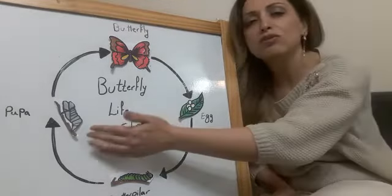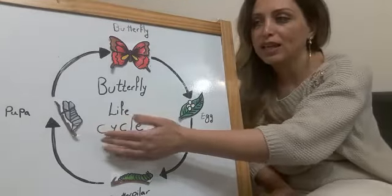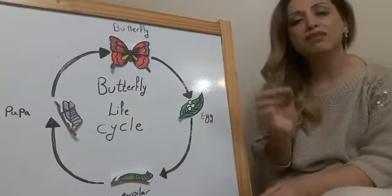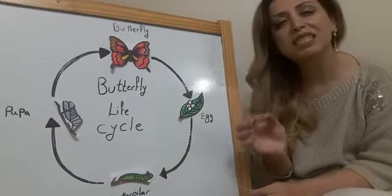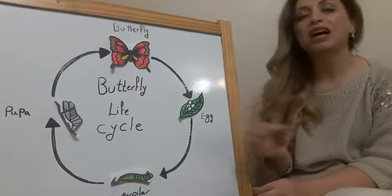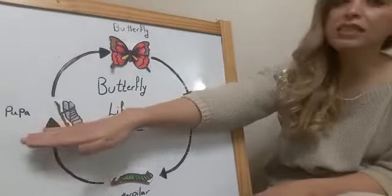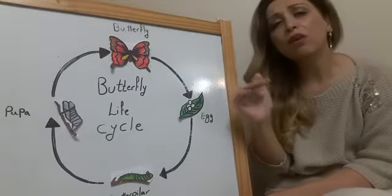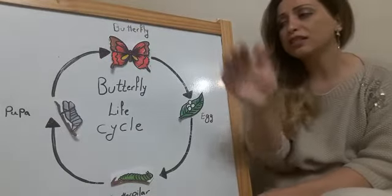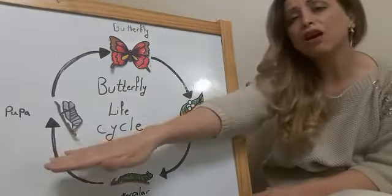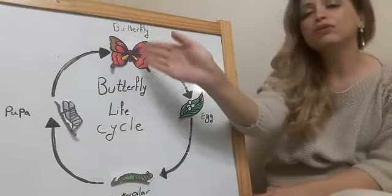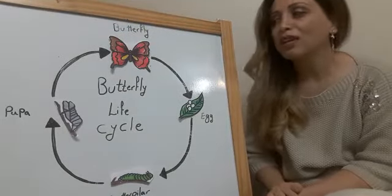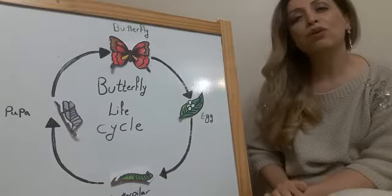they start to find a suitable place to weave a kind of silk around themselves. This stage is about one or two weeks, and after one or two weeks a beautiful butterfly comes out.